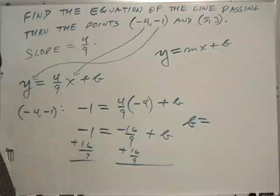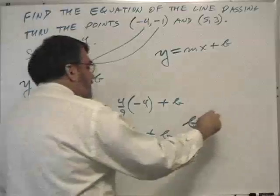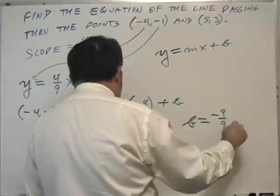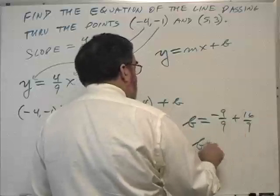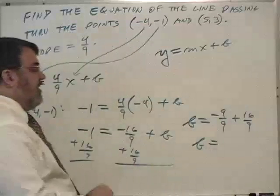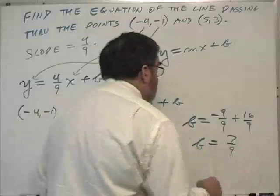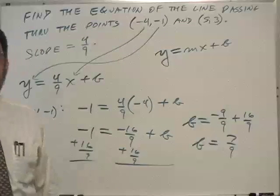Now we need a common denominator. Minus 1 is minus 9 ninths plus 16 ninths. And b equals, what is that, 7 ninths. Okay, now what was b? b is the y-intercept.